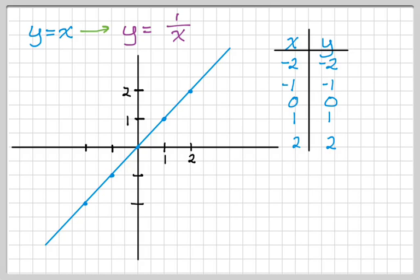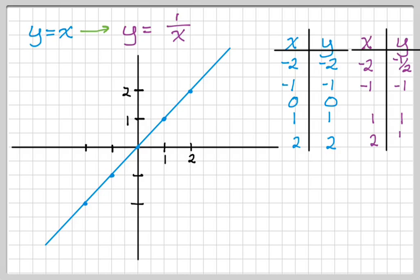What I want to do now is turn my table of values for y equals x into a table of values for y equals 1 over x. I take the reciprocal of each of the y values. So instead of having negative 2, negative 2, I'll have negative 2, negative 1 half. The reciprocal of negative 1 is negative 1, so nothing exciting. You can't take the reciprocal of 0 because that's dividing by 0, so that's not going to be in the domain. But 1, 1 and 2, 1 half.